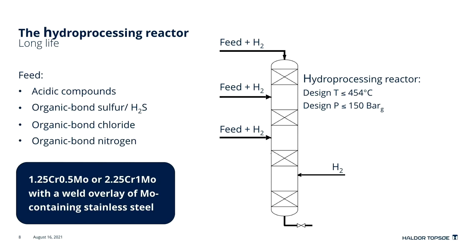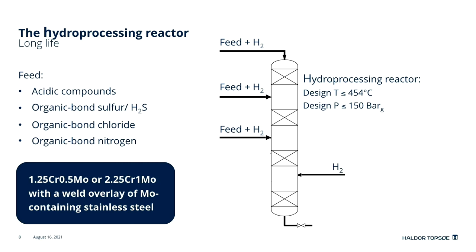In order to ensure a long lifetime for our hydroprocessing reactor, we need a base metal that has sufficient resistance to high-temperature hydrogen attack. Therefore, we use steel containing chromium and molybdenum — it could be one and a quarter chrome half moly or two and a quarter chrome one moly. The steel is overlaid with a stainless steel containing molybdenum, selected such that it has sufficient resistance to the acidic components in the feed. I hope this shows you how we select the material for reactors in hydroprocessing industry. Thank you very much for listening.